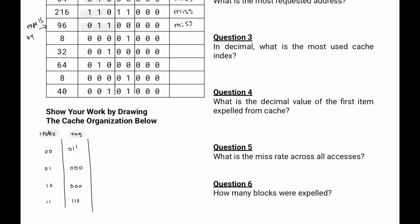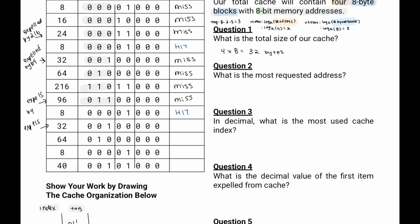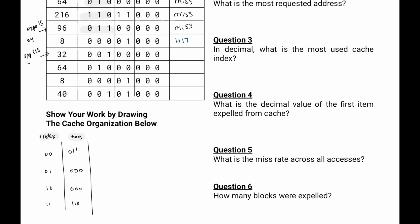Then at 01, we check for 000. Tag matches. So it's a hit again. At 32, go to 00. Is there 001? No. So we'll say 32 expels 96. And then this will be a miss. And then we'll replace the tag with 001. Then we'll go to 00. Check for 010. Not there. Miss. This expels 32. We replace the tag with 010.